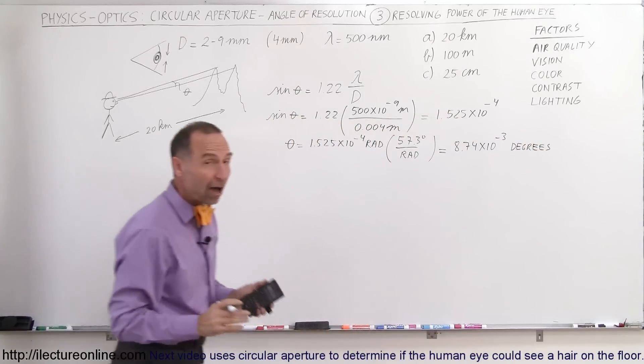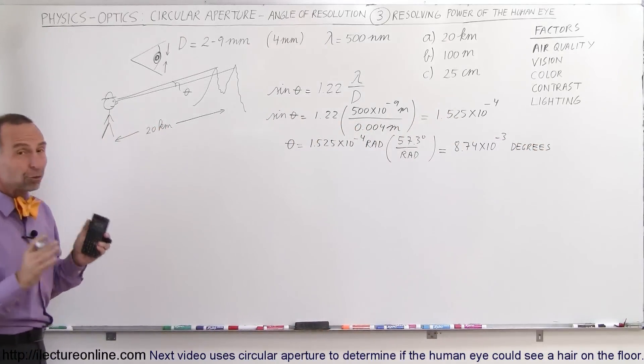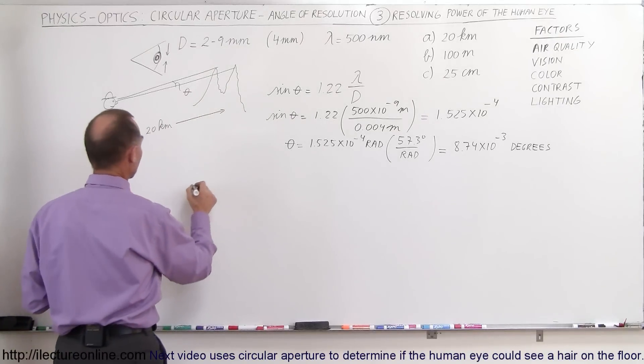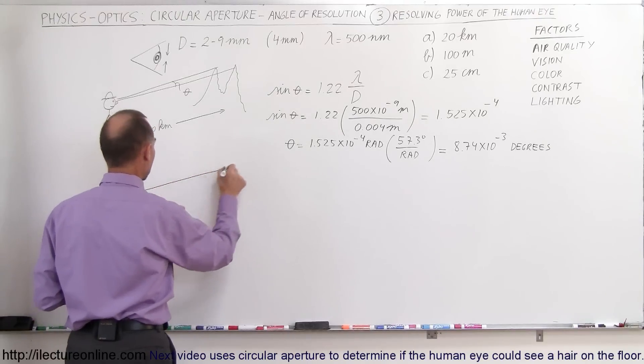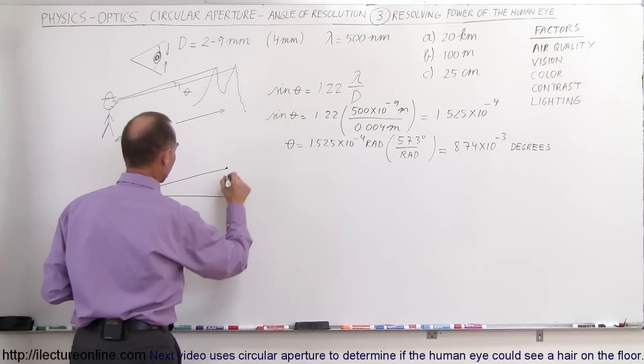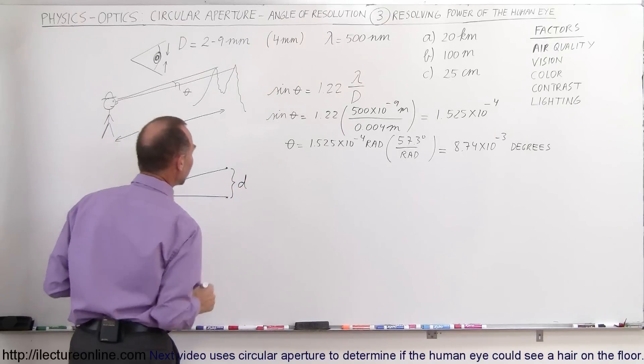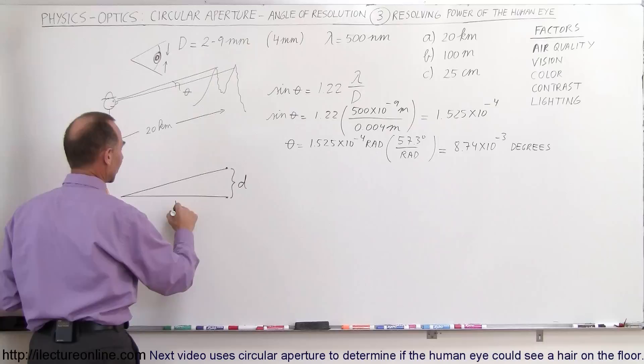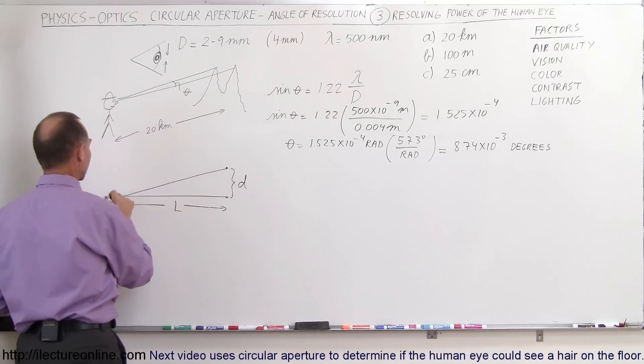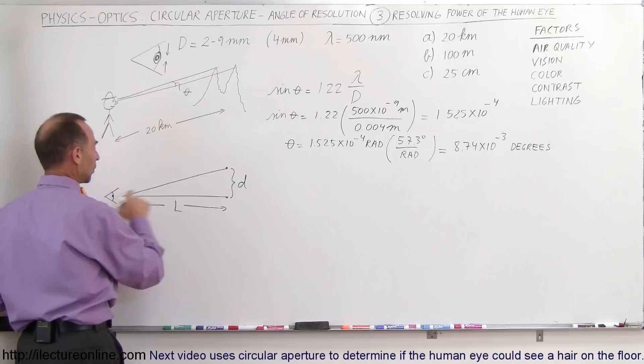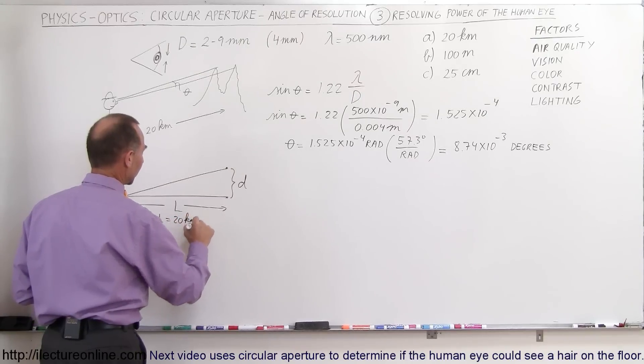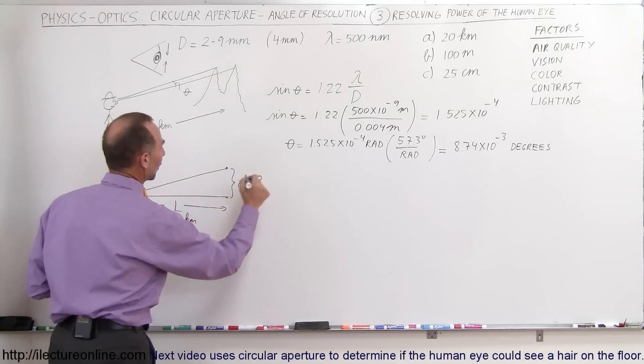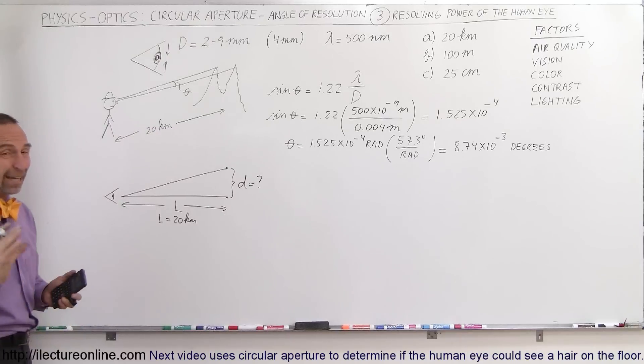Alright, now, how far apart can we separate things at 20 kilometers? So now we need to use a little bit of geometry. So let's take the two points right there, separation distance. And let's say that this here is equal to the distance between them, the separation distance. So let's say that's the length or the distance to the object. Here we are, here's our eyeball. We're looking at two objects. Let's say in this case, L is equal to 20 kilometers. And so we want to know what the distance is between them. Of course, again, we're dealing with very small angles, as you can see. So therefore, at small angles,